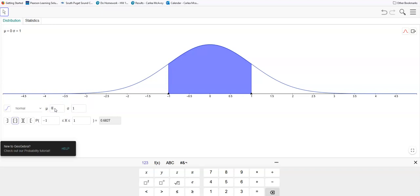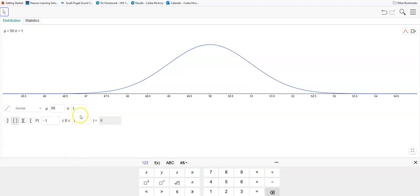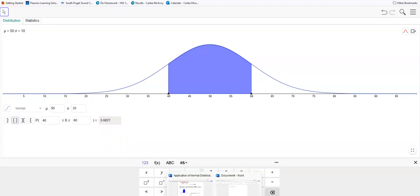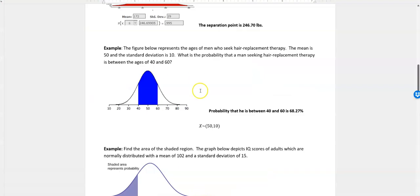We have a mean of 50 and a standard deviation of 10. We want to know what's the probability that it's between 40 and 60, the ages. And we get 0.6827. That's how you can do that on GeoGebra. I didn't use GeoGebra for this picture probably, but I still got the same value, 68.27% that the person coming in for hair replacement would be between those two ages.